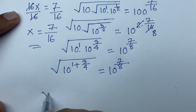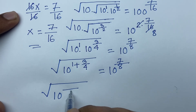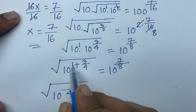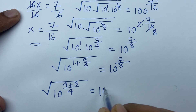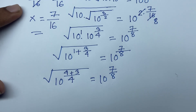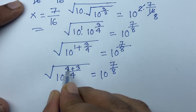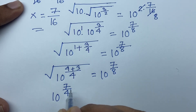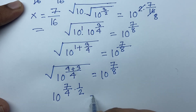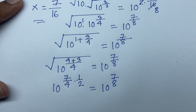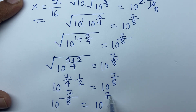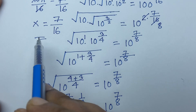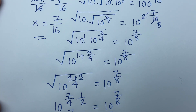The common denominator is 4, so 1 plus 3 over 4 gives 4 plus 3 over 4, which is 7 over 4. Then applying the square root: 7 over 4 times half is 7 over 8. So 10 to the power 7 over 8 equals 10 to the power 7 over 8, confirming x is equal to 7 over 16 is our right answer.